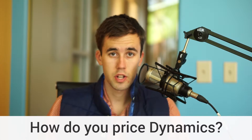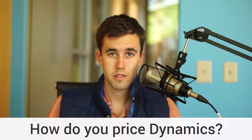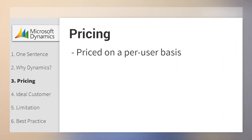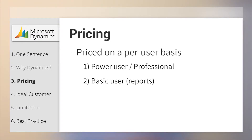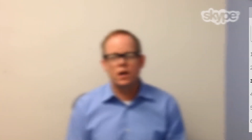That leads into the next question: Microsoft tends to charge for that collaboration, so how is Dynamics priced? We price it on a per-user basis. If a user is a power user, they're a professional-level user. If they're just a basic user who needs to see reports and doesn't need to modify the system, they're a basic-level user. There's also what's called an essential user, so there are three different levels by which the product is priced.